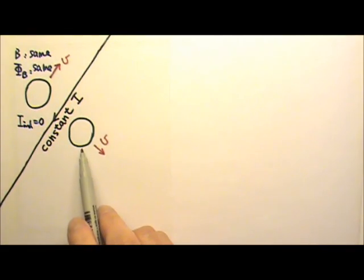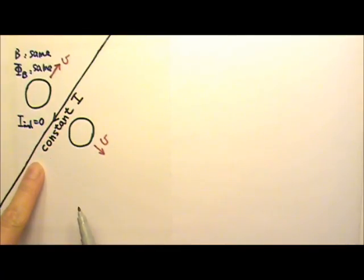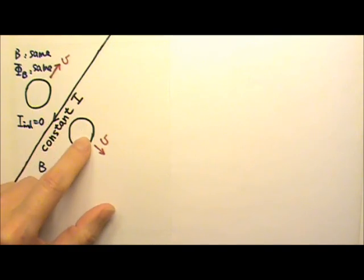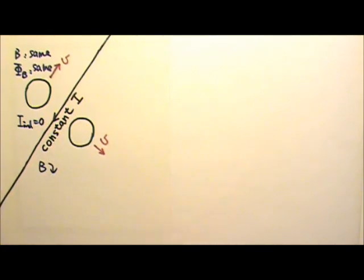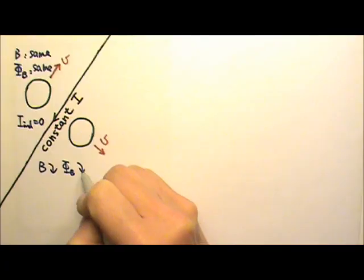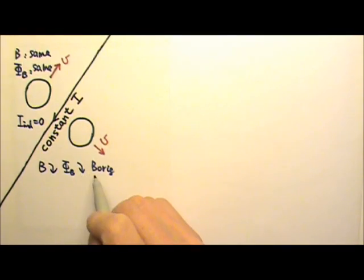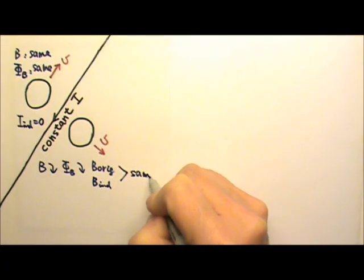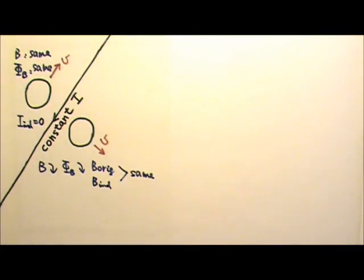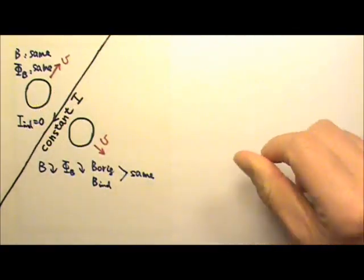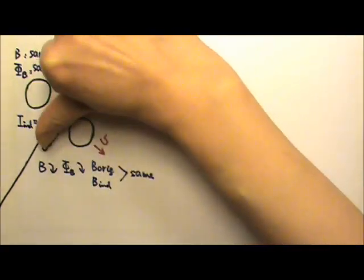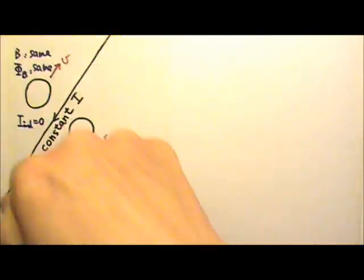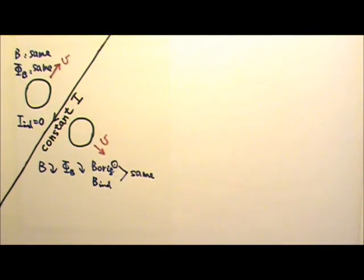This wire loop is being pulled away from the long straight current, so the magnetic field in this wire loop gets weaker, and that means the magnetic flux decreases. This means the original magnetic field and the induced current magnetic field must be in the same direction. The original magnetic field is produced by the long straight current, so using the right-hand rule — thumb following the current — inside this wire loop on this side of the current, the four fingers come out of the paper. So the original magnetic field goes out of the paper.